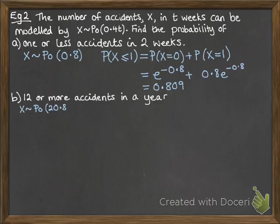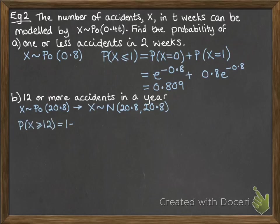Okay, next we have 12 or more accidents in a year. So a year is 52 weeks. 52 times 0.4 gives us 20.8. And that approximates to a normal distribution of 20.8, 20.8. And we're going to work out the probability that x is greater than or equal to 12. Again, we're using the normal because it's a much easier calculation. We don't want to add up all of the values from 0 up to 12.